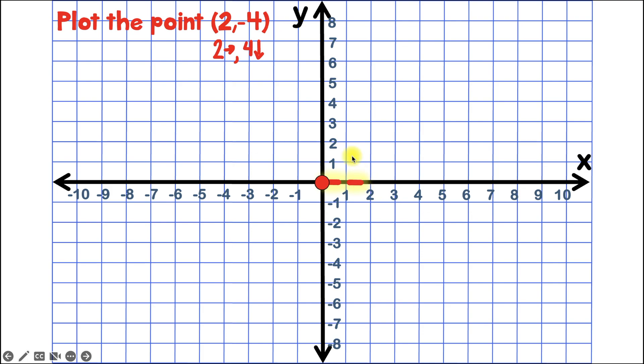And then from here, we're going to go 4 units down. 1, 2, 3, 4. So this is going to be where we plot our point. And then it's always a good idea to label it. So next to this, we'll write 2, negative 4.